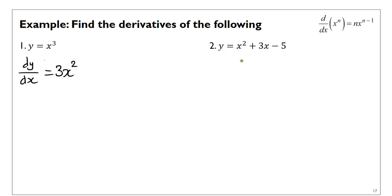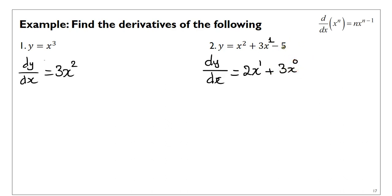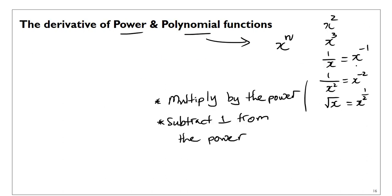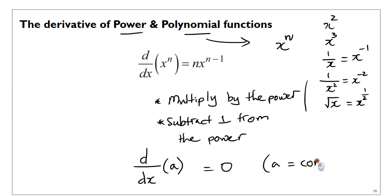Example 2. If you have three expressions, the derivative is just the sum of the individual derivatives. So if you have a sum, you just derive each term. The first term: multiply by the power, so 2x. Then 3x is 3x to the power of 1, so you bring down the 1, giving just 3. And a constant — think of it as 5x to the power of 0 — if you multiply 5 by 0, there's nothing left. So you can just write 2x plus 3. The derivative of a constant is zero.